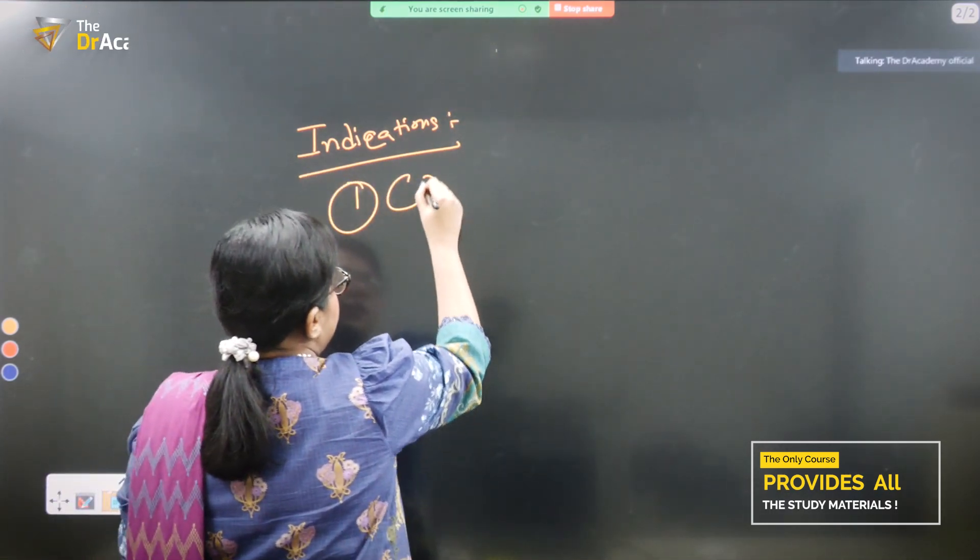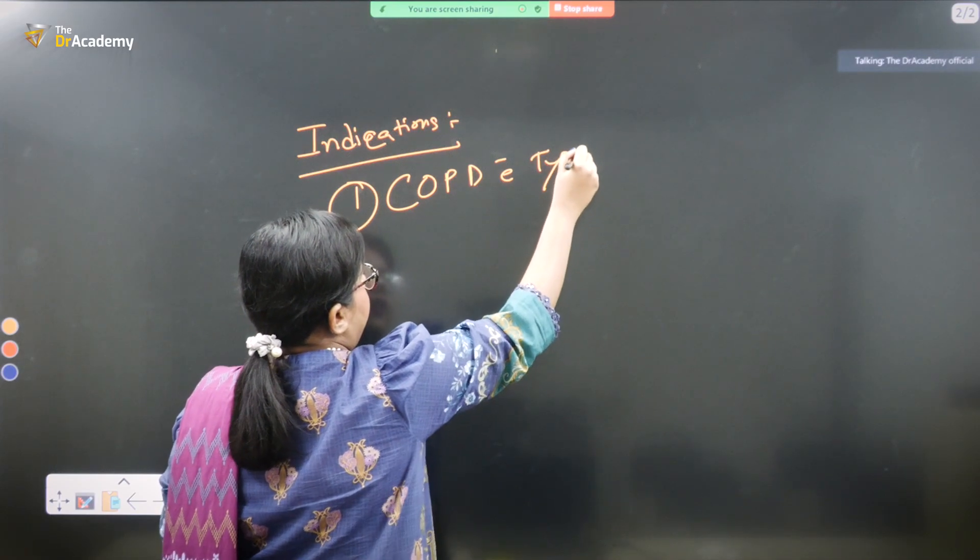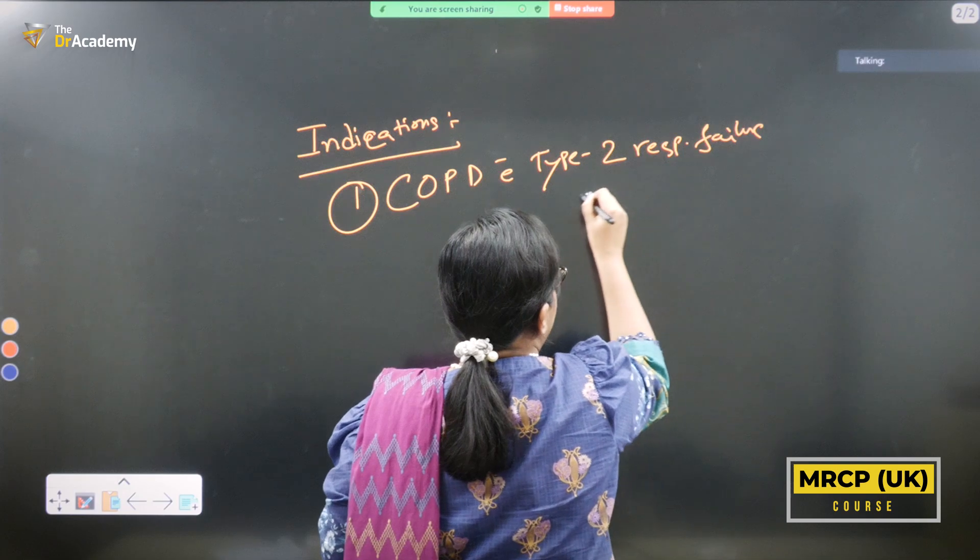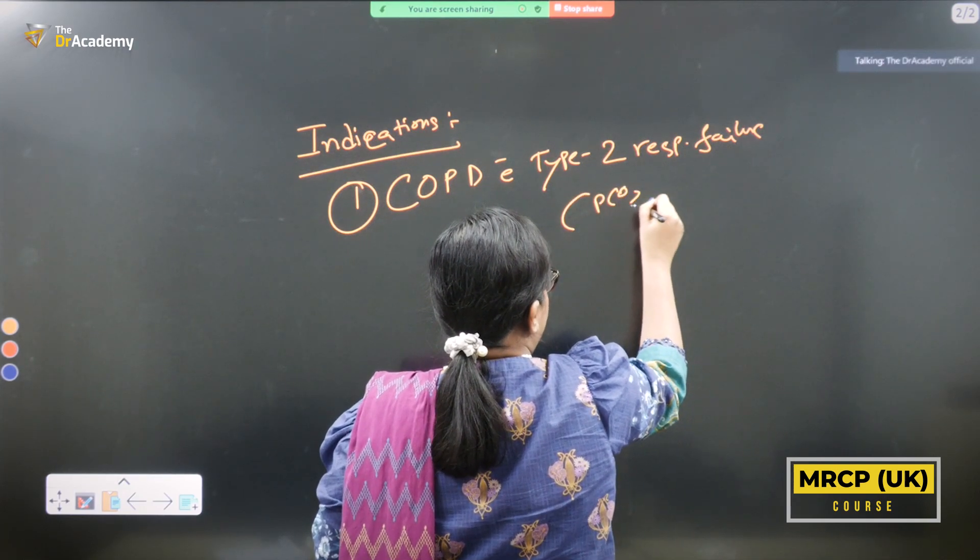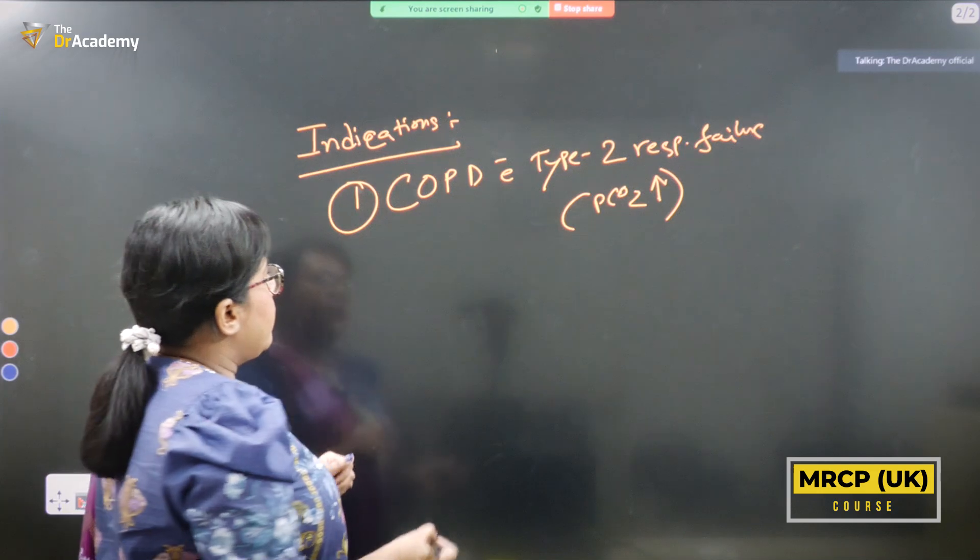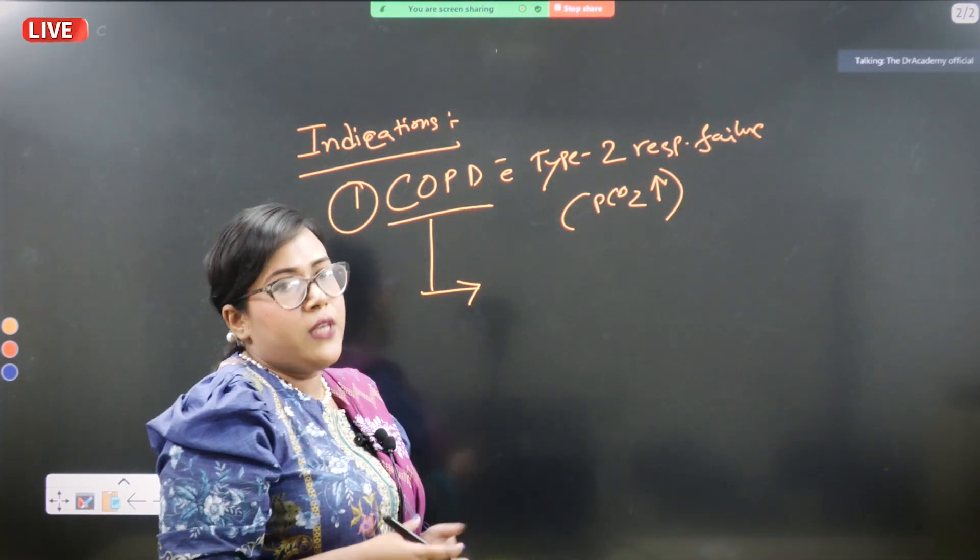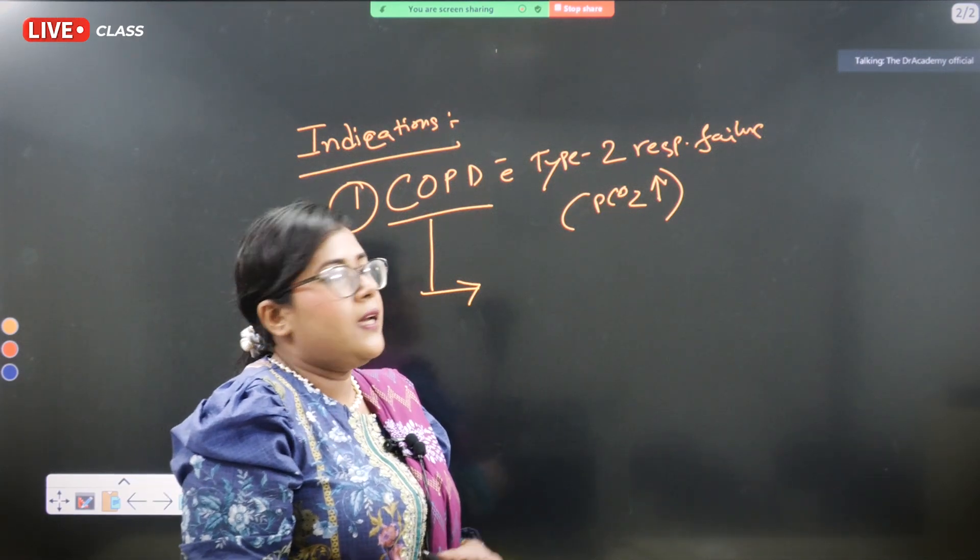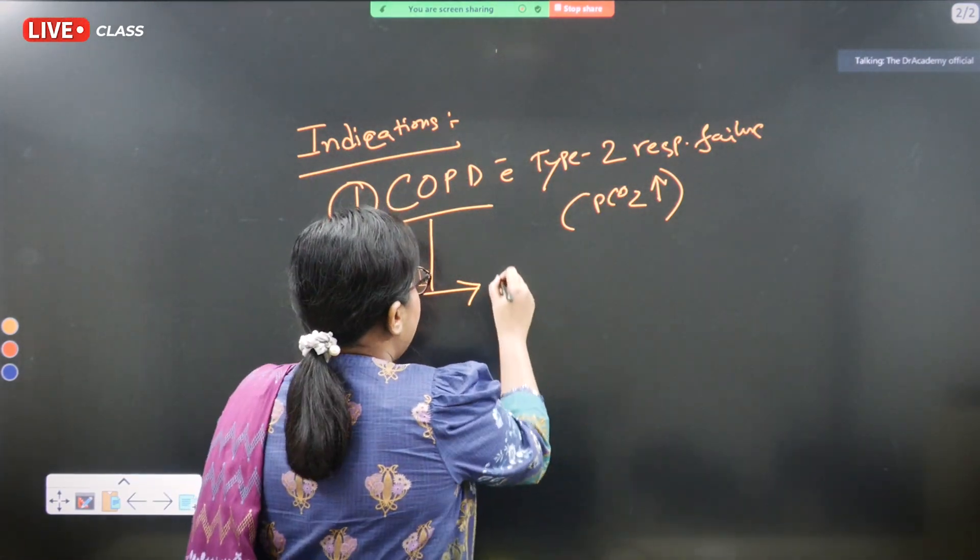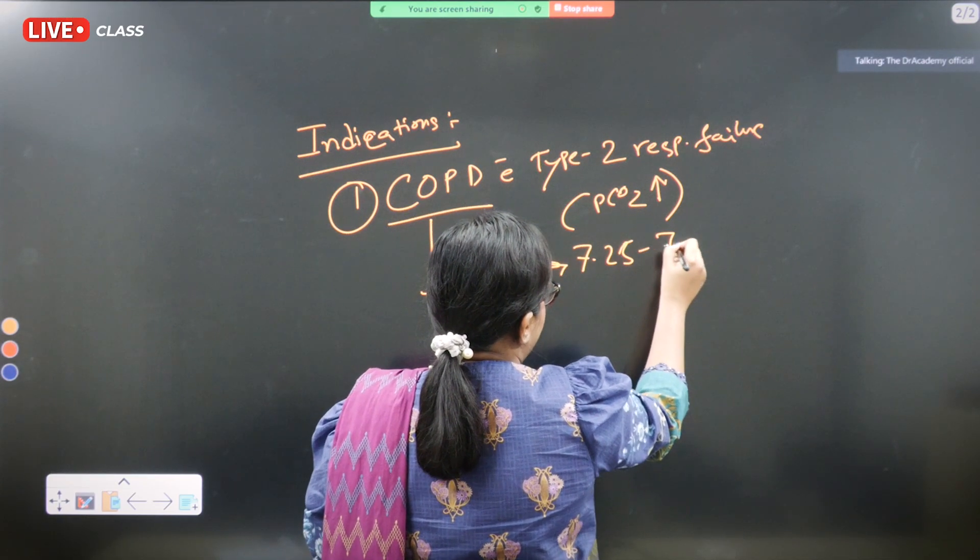Number one is COPD patients with type 2 respiratory failure where the partial pressure of carbon dioxide is on the rise. Or similarly if the COPD patient has persistently, according to the ABG report, persistently raised acidotic level when the pH level is between 7.25 to 7.35.